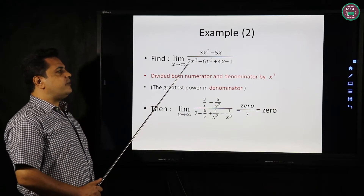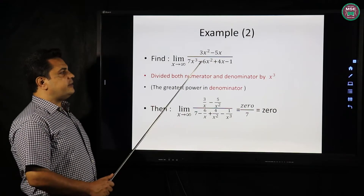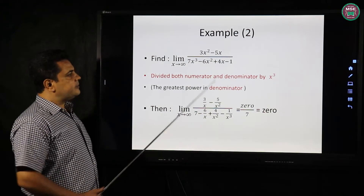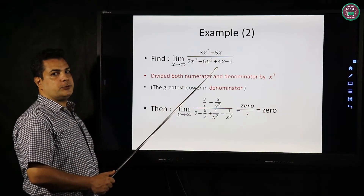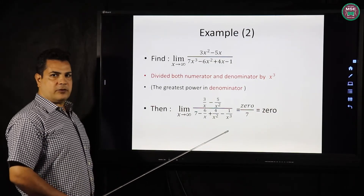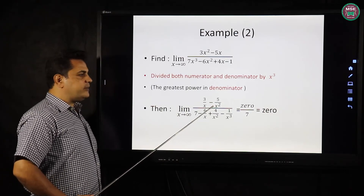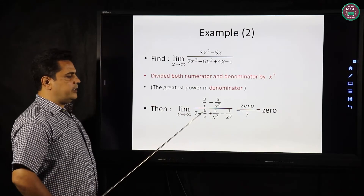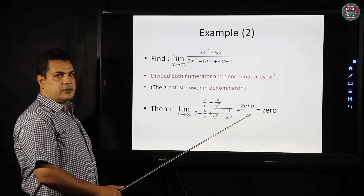Over: 7x cubed over x cubed equals 7. Then 6x squared over x cubed equals 6 over x. 4x over x cubed equals 4 over x squared. And negative 1 over x cubed equals negative 1 over x cubed. As x tends to infinity, any number over x equals 0, so we get 0 minus 0 over 7 minus 0 plus 0 minus 0, which equals 0 over 7. The final answer: zero over any number equals 0.